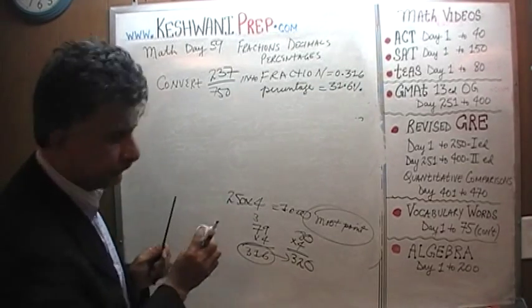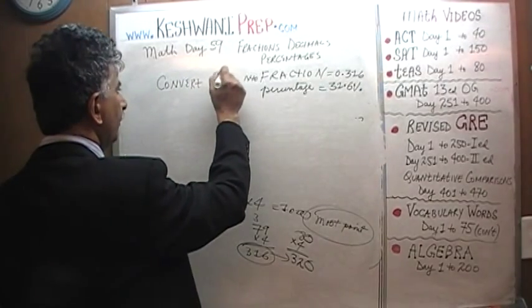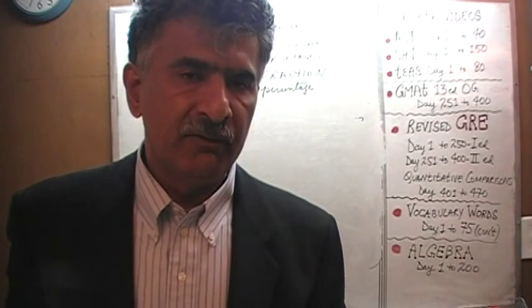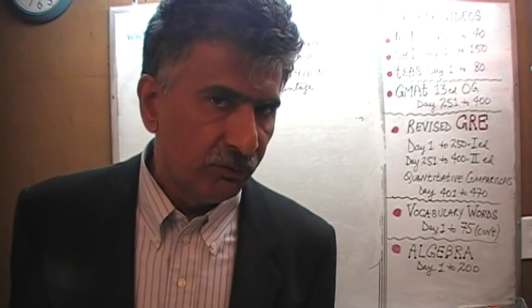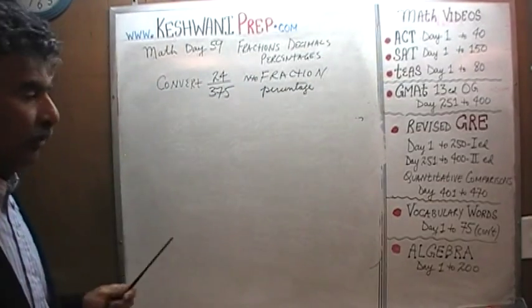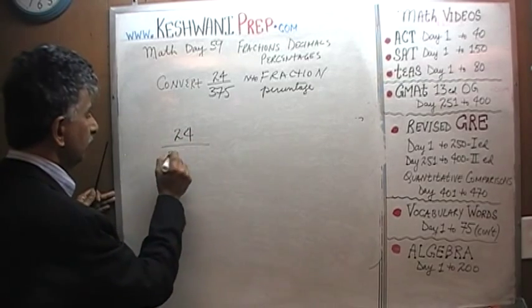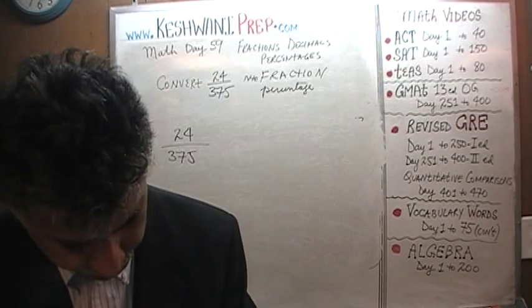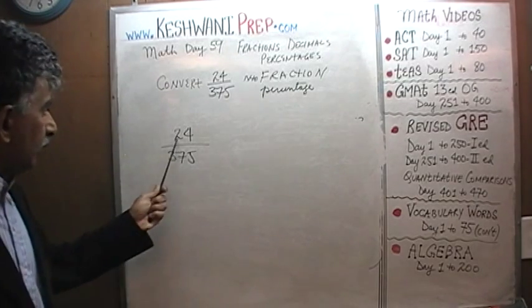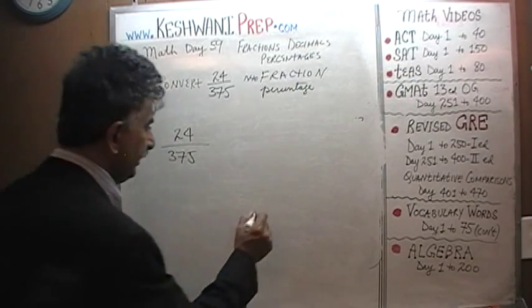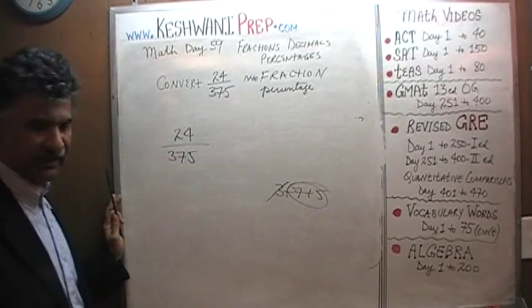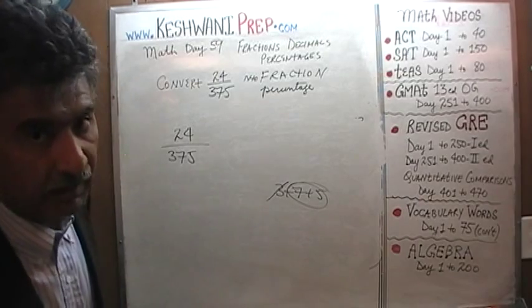Next question: convert 24 over 375 into a decimal and percentage. Same logic, same method — nothing has changed. The very first thing we notice: 2 + 4 = 6, so 24 is divisible by 3. For 375: 3 + 7 + 5 = 15, and 15 is divisible by 3. So 375 is also divisible by 3. We can divide both top and bottom by 3.